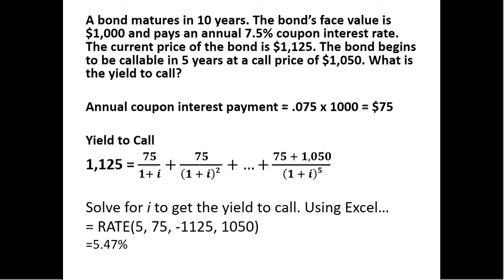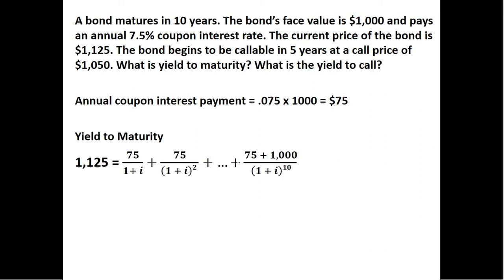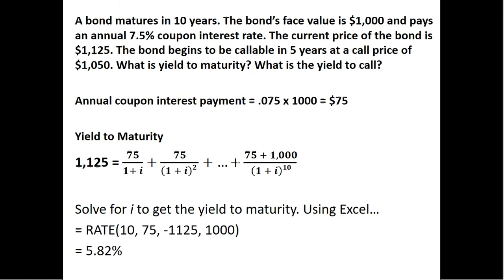And this will be different than the yield to maturity. If we wanted to calculate the yield to maturity, I'll do that here. This bond matures in 10 years, so we're going to discount back these interest payments and then the bond's face value over this 10-year period. Solving for i here will be the yield to maturity. If you were to buy this bond today at $1,125 and held it for the entire 10-year period, you would get a yield to maturity of 5.82%, again, just using this Excel formula.